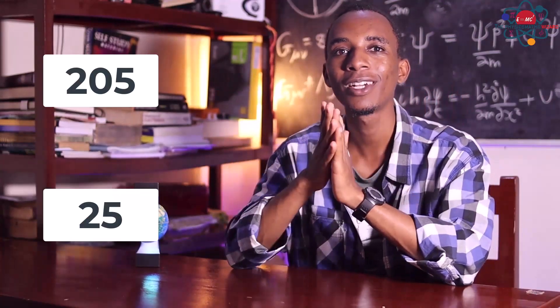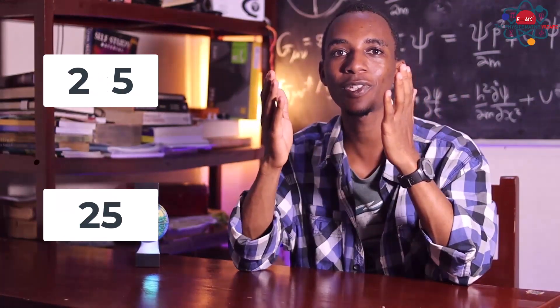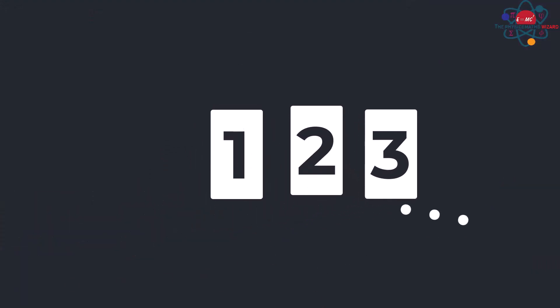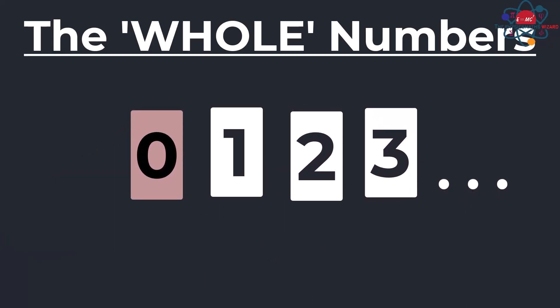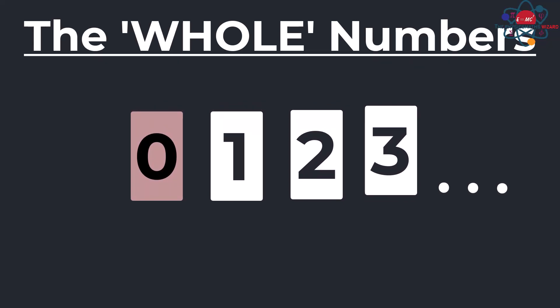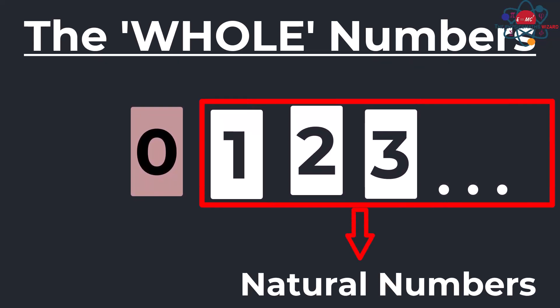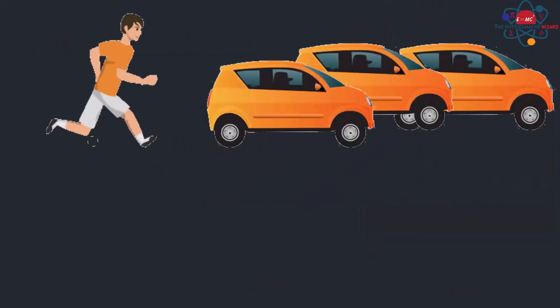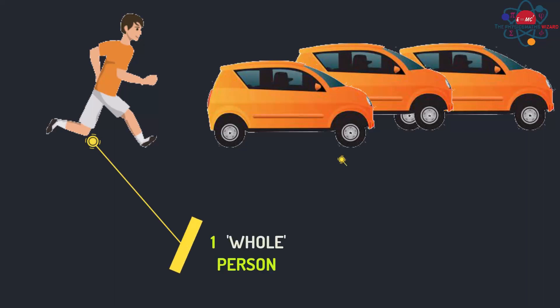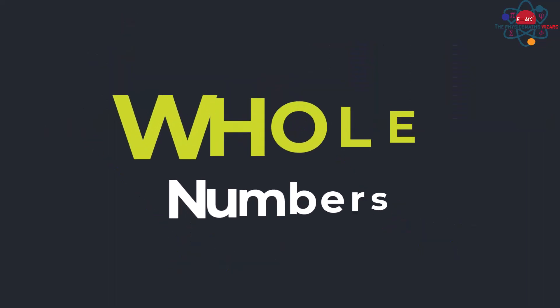Technically speaking, zero wasn't a number when it was first introduced. It was more like a placeholder to distinguish numbers like 205 from 25, and that was much better than just leaving a space or using a dot. Adapting zero into the available numbers led to the birth of a new type of numbers: the whole numbers as we know them today. These were simply an extension of the natural numbers to include zero — numbers that can only be used to describe objects as wholes. For example: one person, three cars, five people. Hence the name, whole numbers.